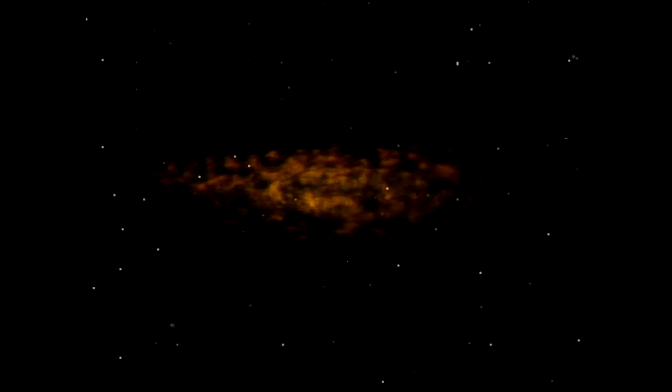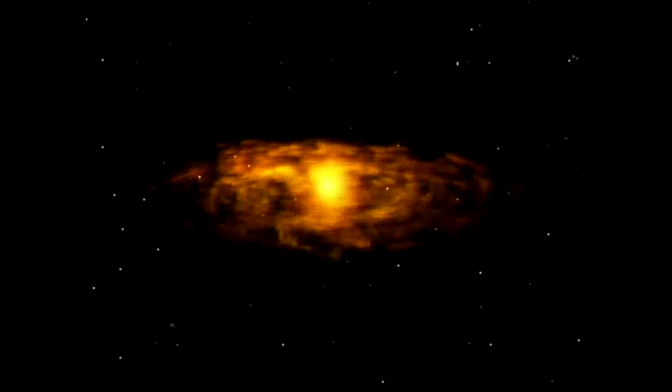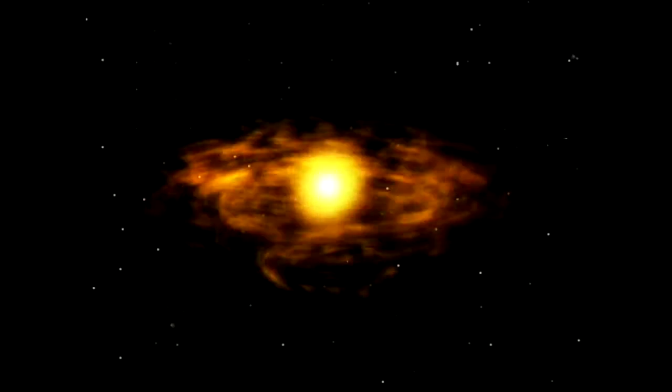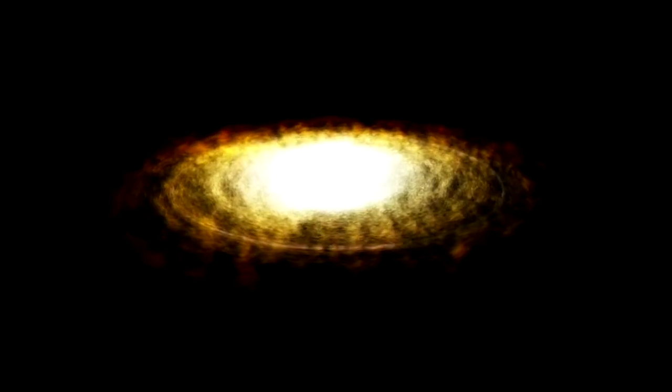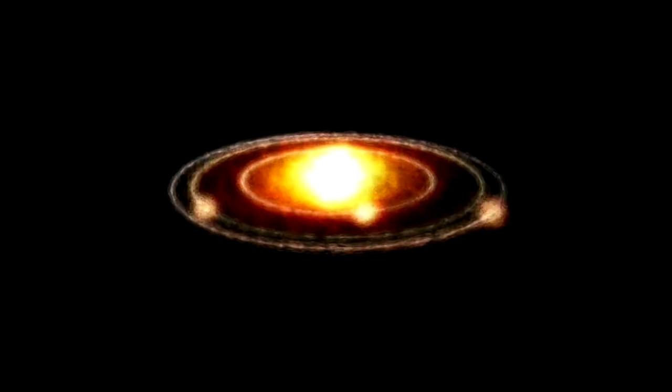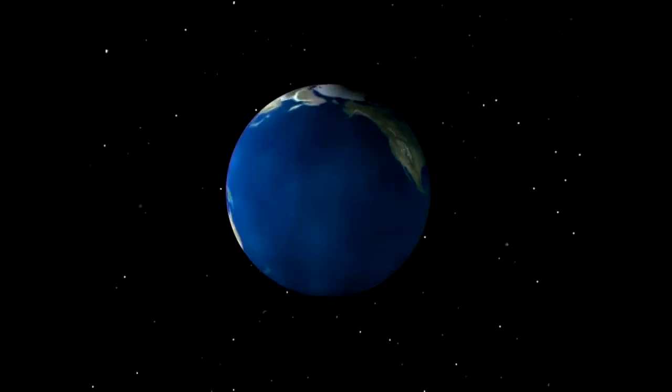Nebulae made up of gas and dust rotate and contract, with the great mass in the center, the Sun. The rest, still turning, condenses into planets. One of these planets still rotating is the Earth.